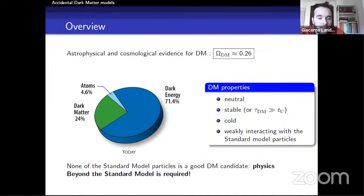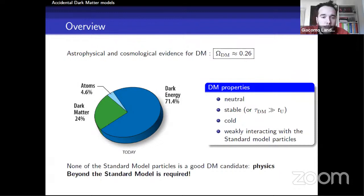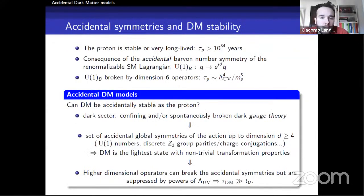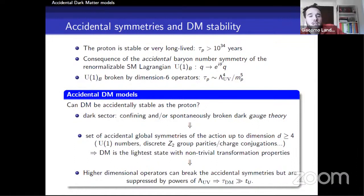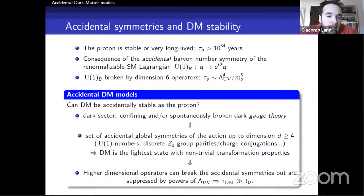The proton is stable due to an accidental baryon number symmetry of the standard model Lagrangian up to the renormalizable level, which in turn follows from gauge invariance. The natural question is: can dark matter be accidentally stable, like the proton? The answer is yes. What we need is a dark sector — a confining or spontaneously broken dark gauge theory — where gauge invariance naturally leads to a set of accidental global symmetries. The lightest state with nontrivial transformation properties is automatically stable and can be identified as the dark matter candidate.